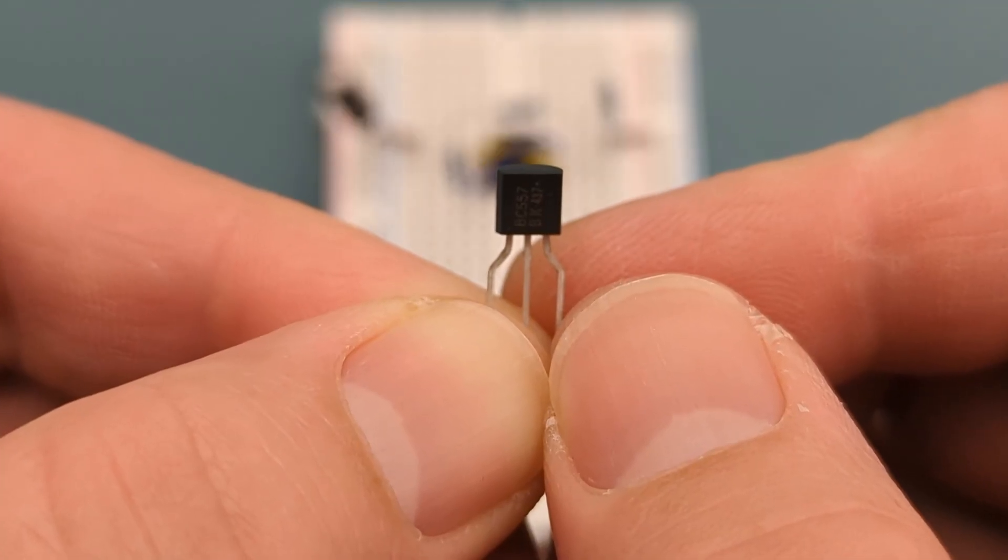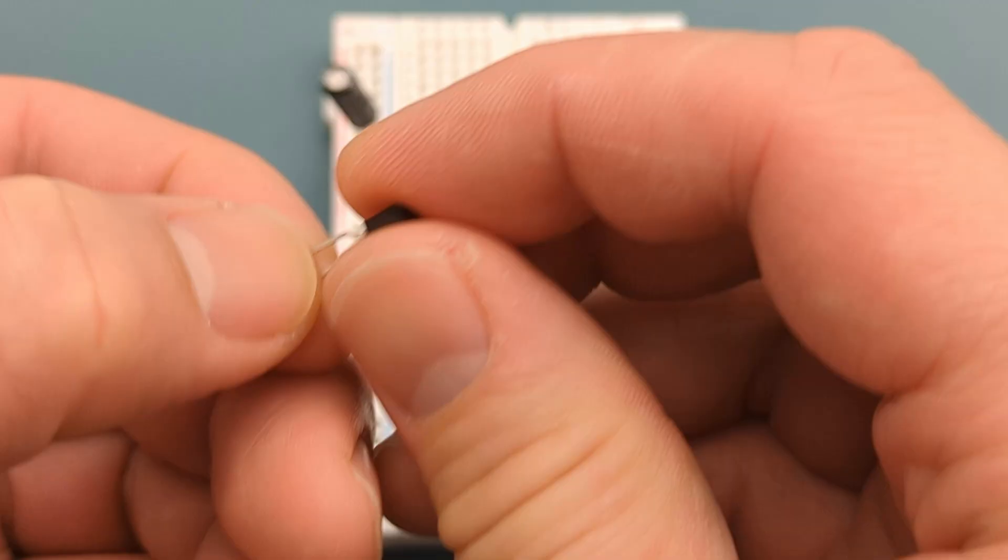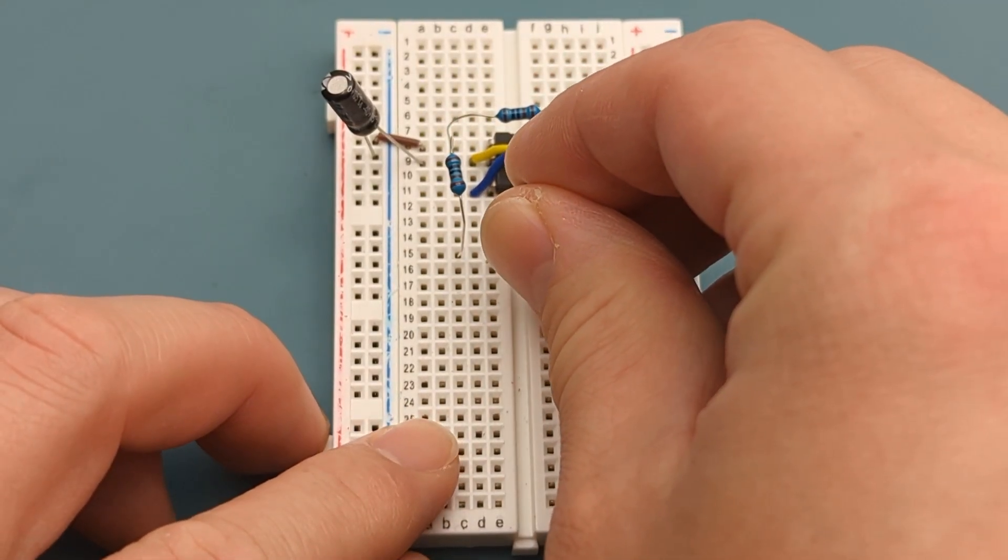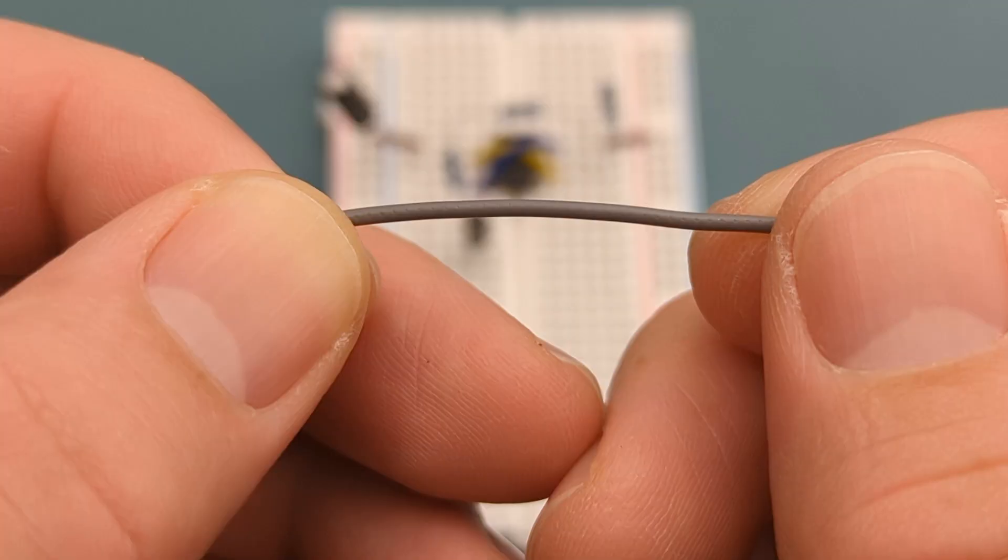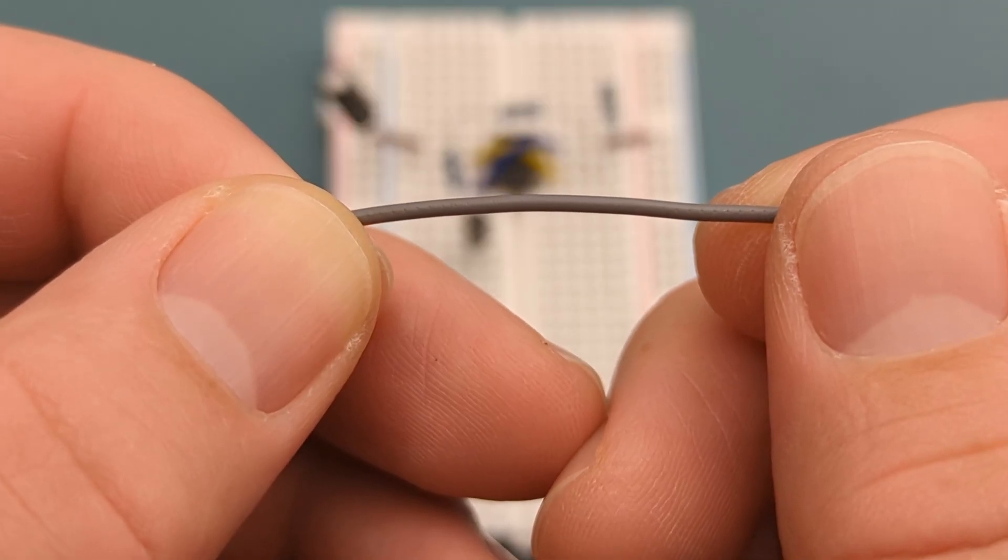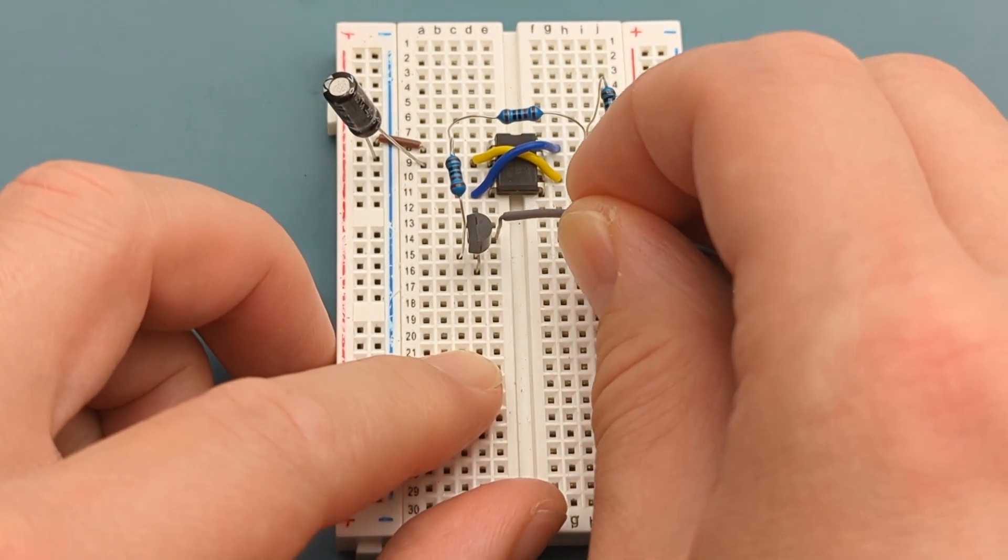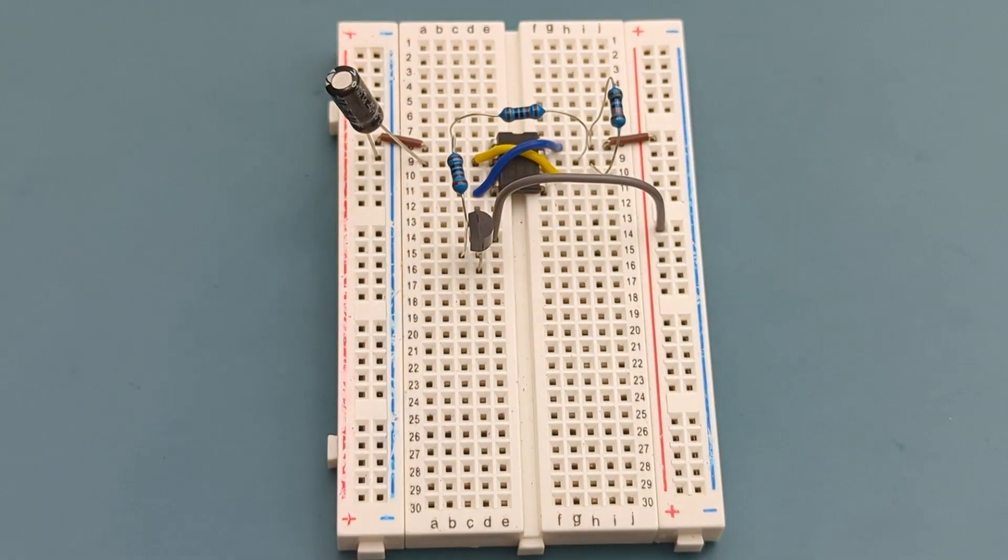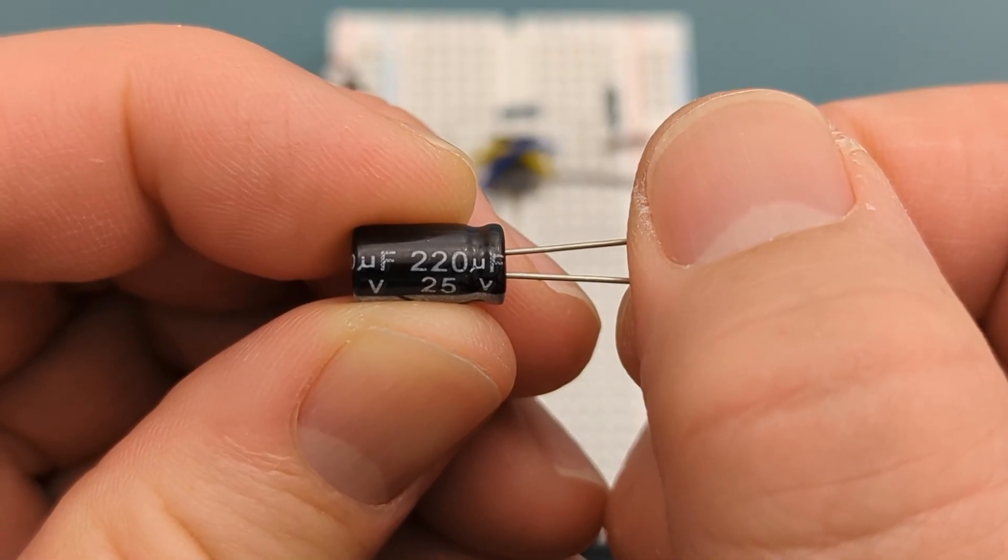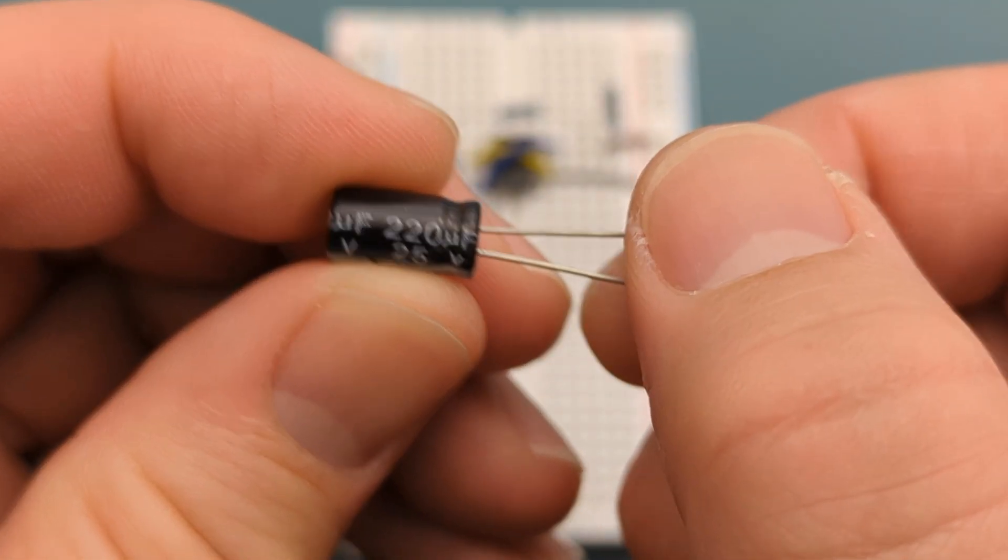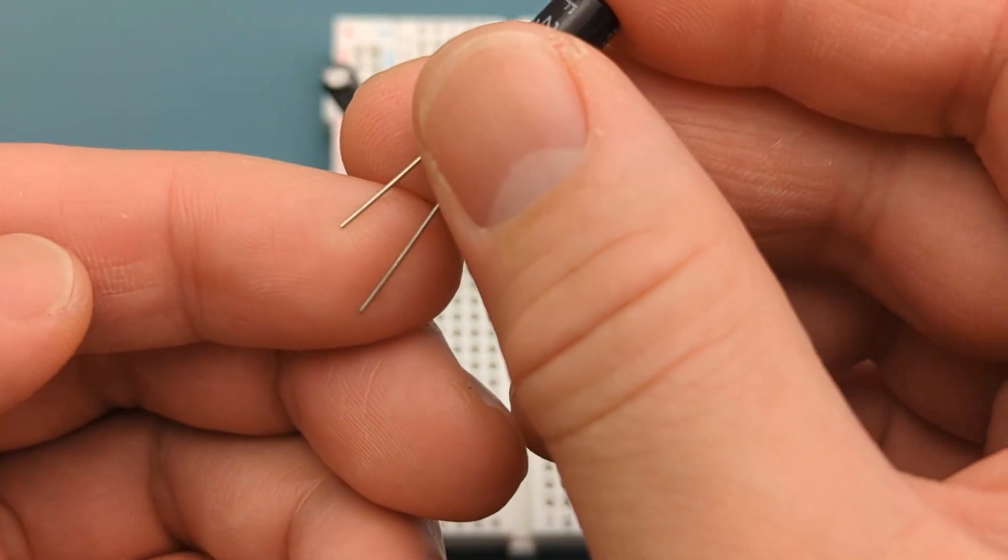Insert a BC557 transistor into the breadboard. The base of the BC557 is in the same row as the resistor. Insert a jumper wire into the same row as the emitter of the BC557 and the positive rail. Insert a 220 microfarad capacitor into the same row as the collector of the BC557 and the negative rail. The cathode is in the negative rail.